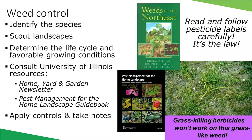Consult with the Home Yard and Garden newsletter website — you can search for articles about your pest. The guidebook Pest Management for the Home Landscape is published and revised periodically by University of Illinois pest control specialists and is available for sale through your local extension office. Apply controls and take notes of what weeds you had where, what controls you used, and when you used them. Give your control efforts time to work, then evaluate the quality of control. Read and follow pesticide labels carefully — it's the law. Be sure all species are included on the label, use the labeled rate, more is not better, and wear the proper equipment and clothing.